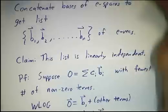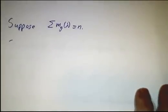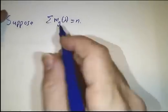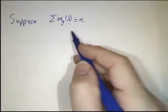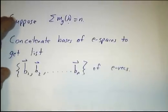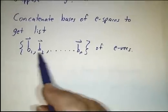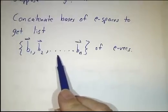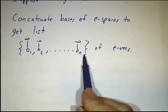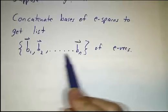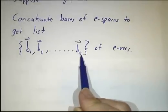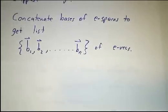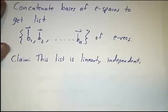Suppose the sum of the geometric multiplicities is n. You can write a basis for the first eigenspace, a basis for the second eigenspace, a basis for the third eigenspace, and put all those bases together to get something with n elements. We'd like this to be a basis for Rⁿ or Cⁿ. Since n vectors in Rⁿ form a basis if they're linearly independent, we need to show that these vectors are linearly independent. I claim that they are.